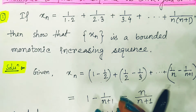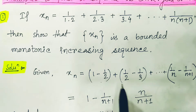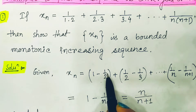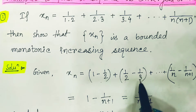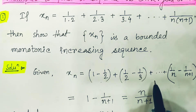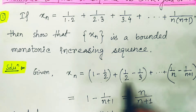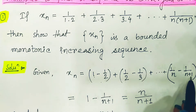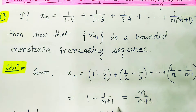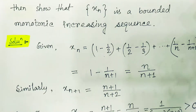When we open up the brackets, we find that -1/2 and +1/2 cancel out, likewise -1/3 and +1/3 cancel out. So after simplification, we are left with 1 minus 1/(n+1), which equals n/(n+1).